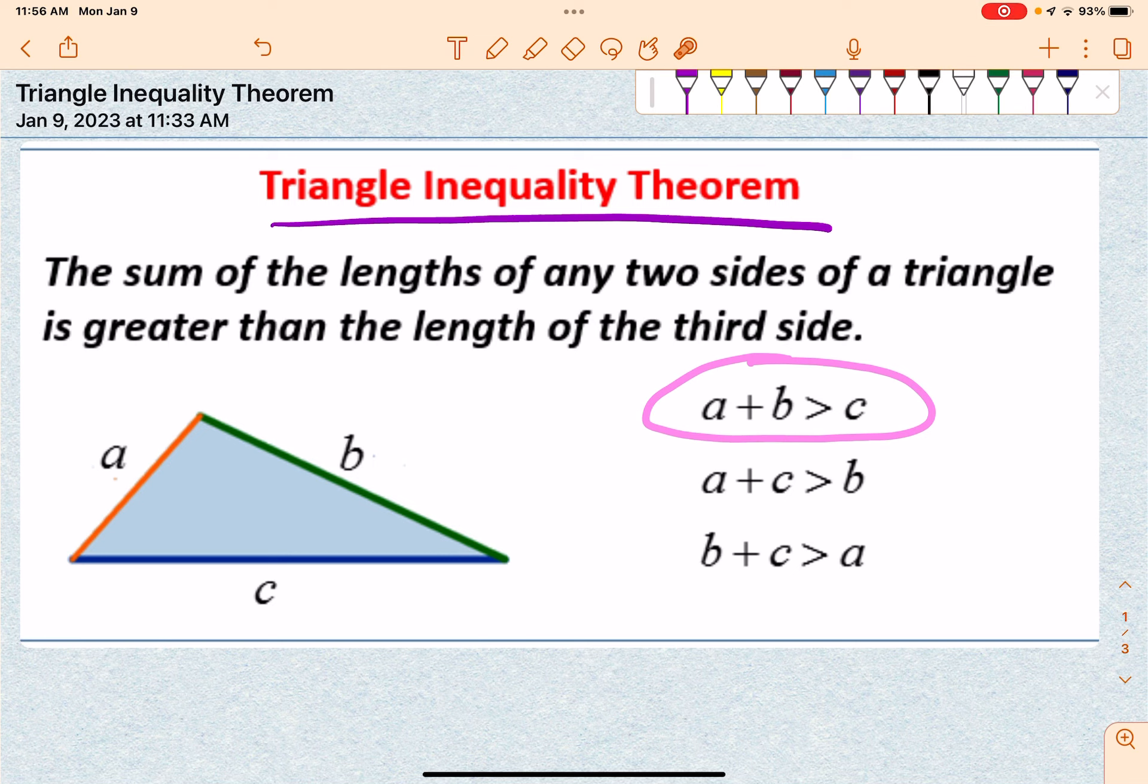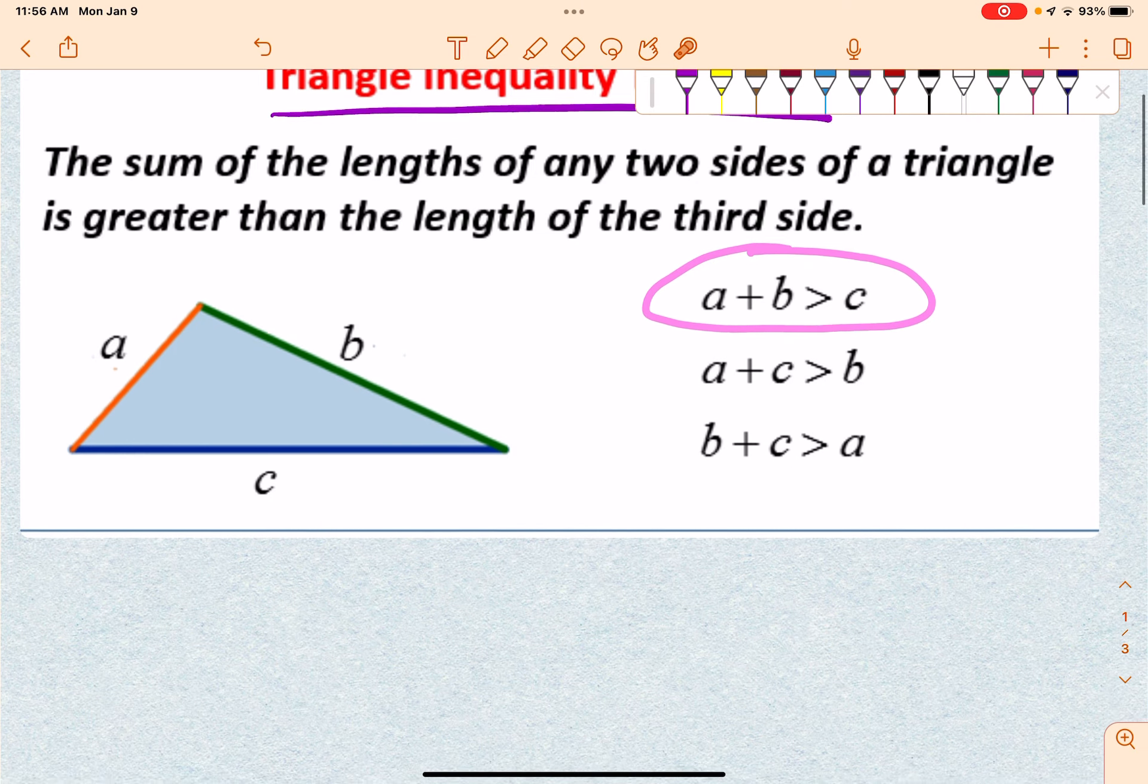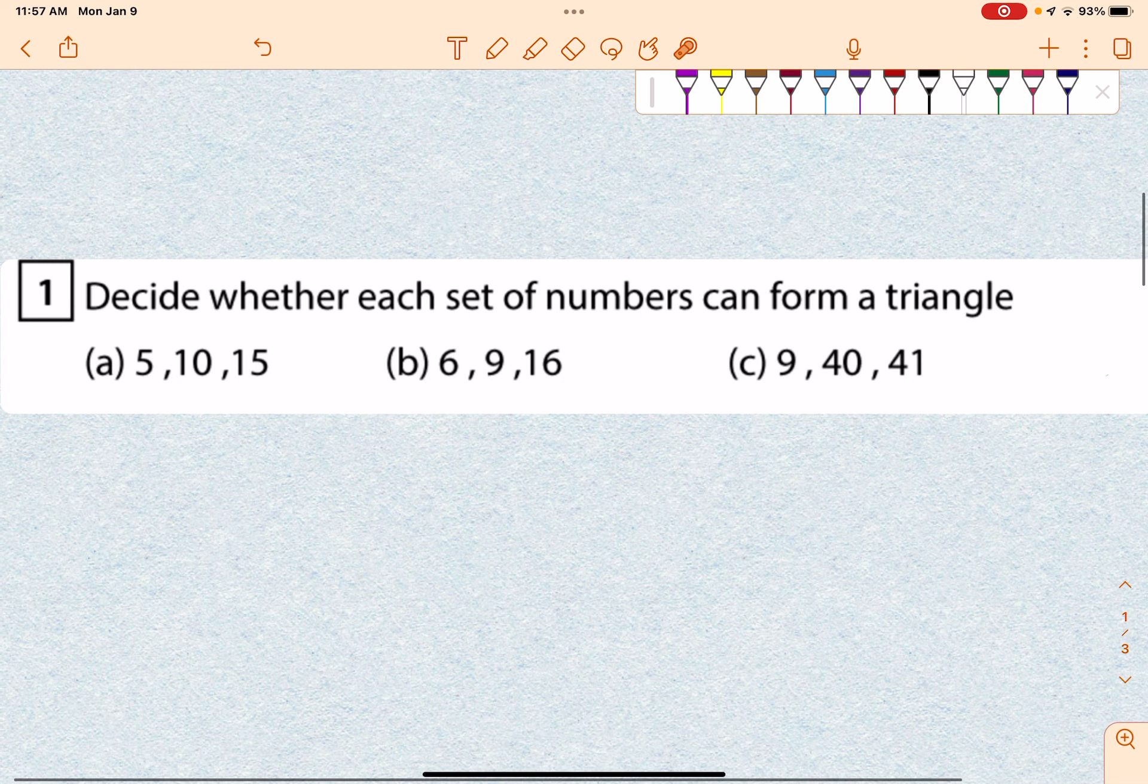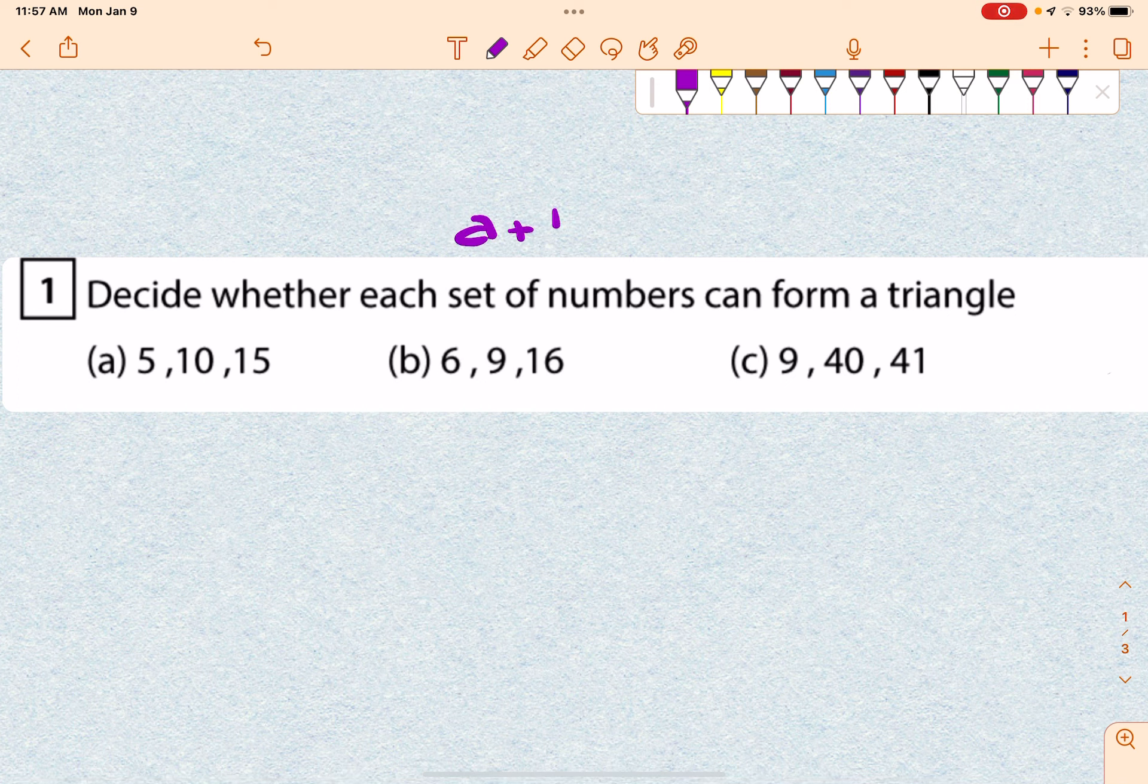So sometimes they'll give you three lengths of what they call a triangle, and they'll say prove whether it's a triangle or not. Let me give you a couple examples so you can see how this works. So decide whether each set of numbers can form a triangle. We're going to make C be the largest number.